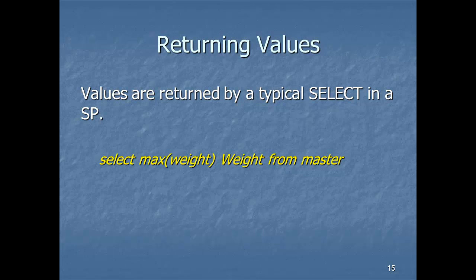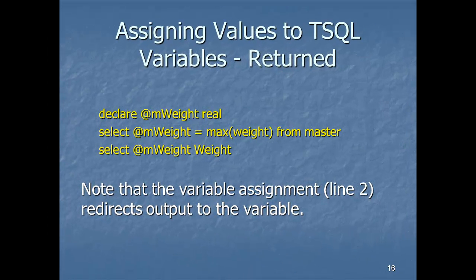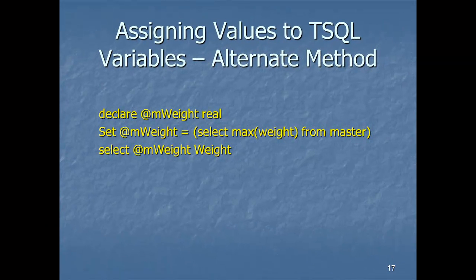A typical SELECT returns values in zero or more rows — in this case the greatest weight of baseball players is returned as a single row because it's an aggregate function. We can pull a value from a SELECT and redirect the output from the screen to the variable @mweight. I previously demoed two methods. The alternative method calculates MAX(weight) in a standard select and then uses SET to return the value to the @mweight variable. I don't care which method you use, but I suggest you stick with one.